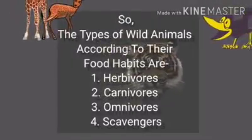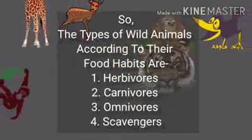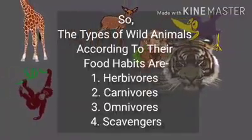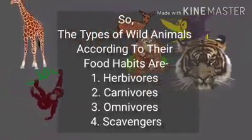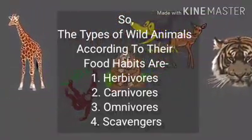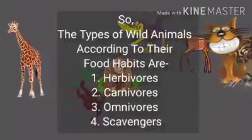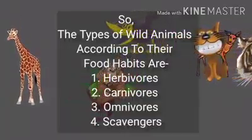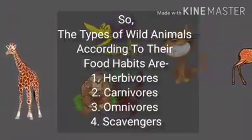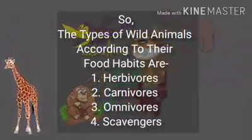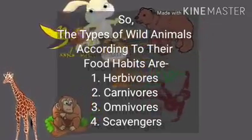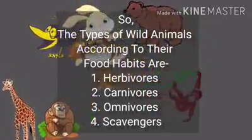So what did we learn today? We learned the types of wild animals according to their food habits. The types are herbivores, carnivores, omnivores, and scavengers.